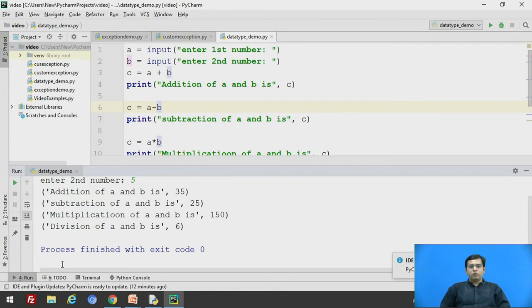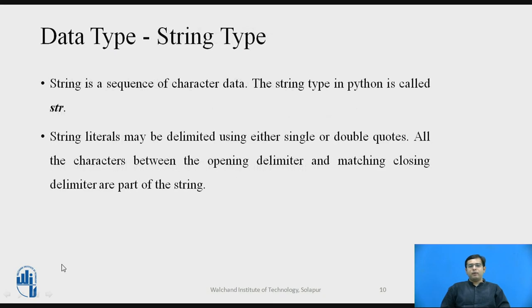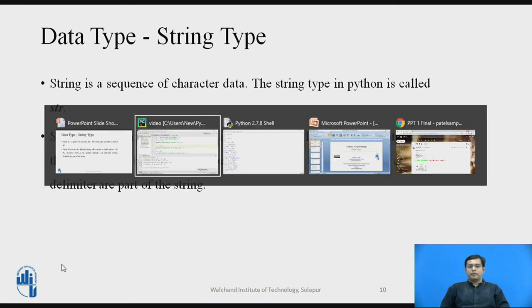Moving forward to the last data type. The last data type is string. String is a sequence of character data. A string type in Python is called str. The string in Python can be written in two ways. Either it can be in a double quote or a single quote. But when you open a double quote, it should be closed by a double quote. And if you are using a single quote, the single quote should be closed by a single quote itself. We will see an example.